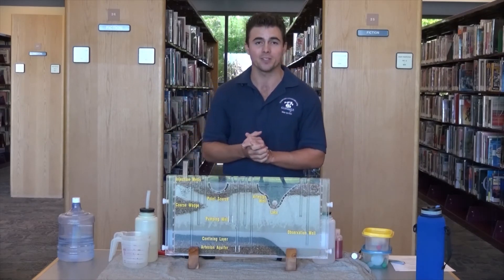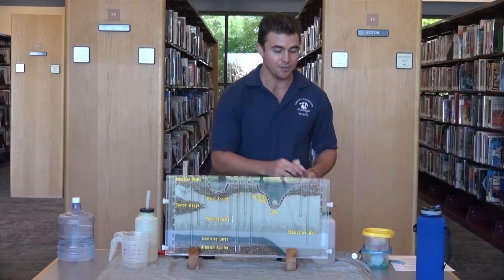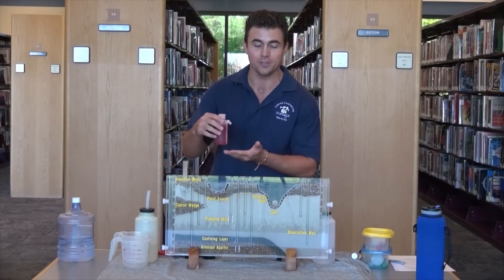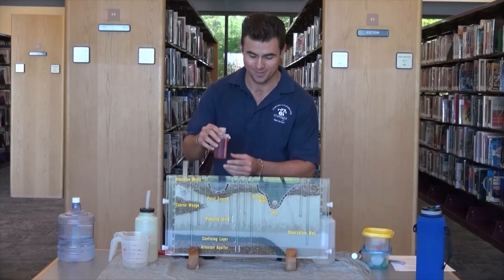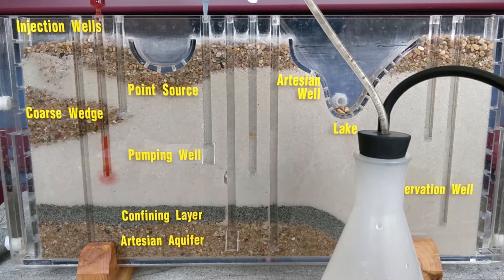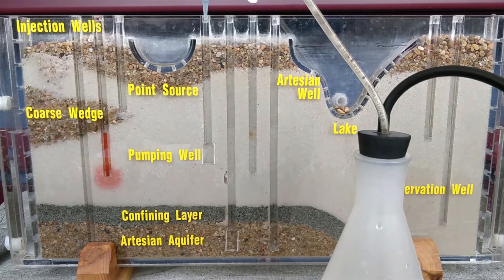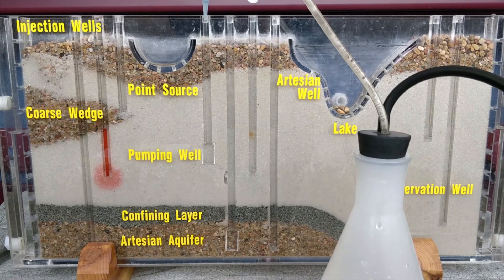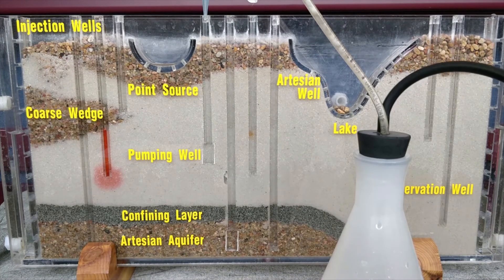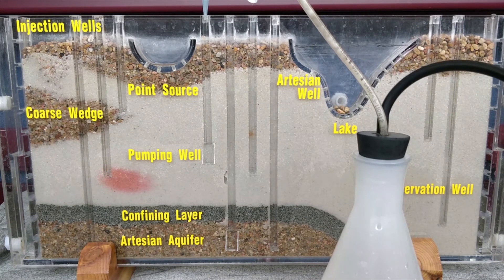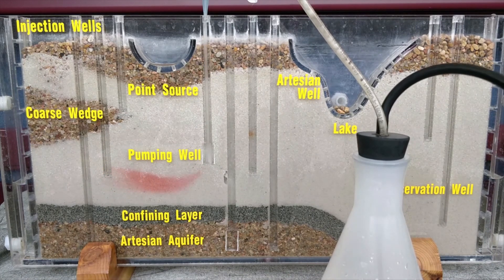And to demonstrate this pollution, I will add some food coloring into our groundwater model. In adding the food coloring to the groundwater flow model, we can see that this pollution is making its way into our groundwater by gravity. Now, notice what happens to the food coloring — our pollution — as I pump groundwater from the pumping well.